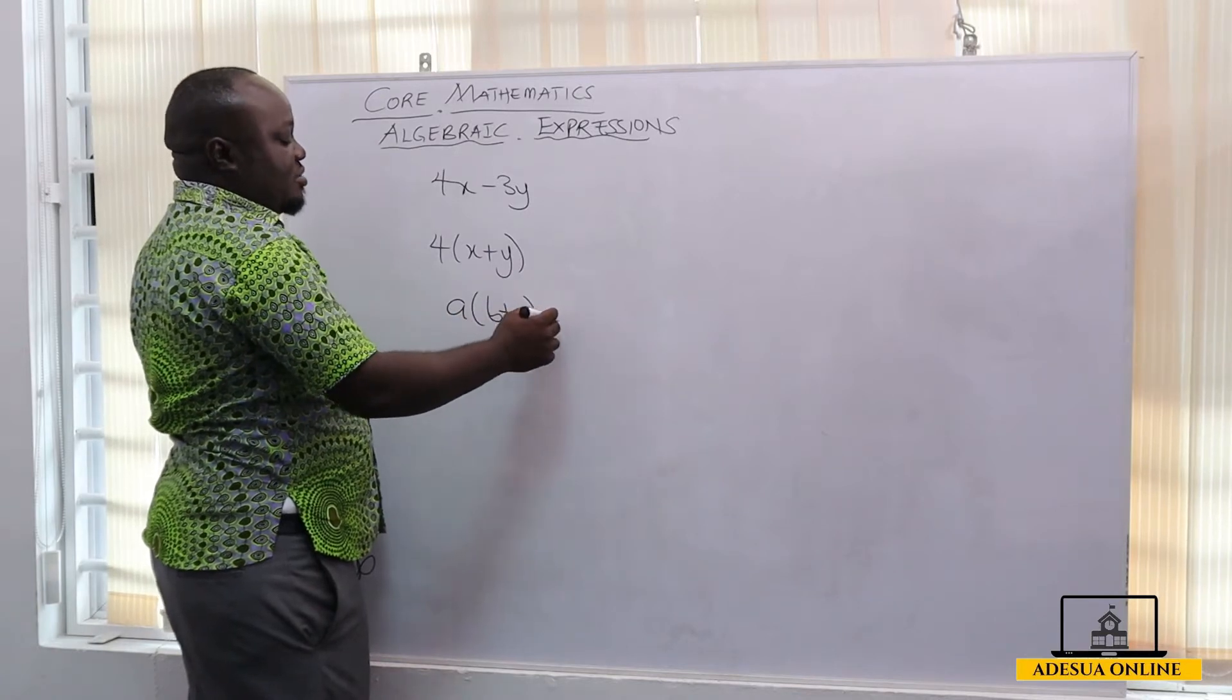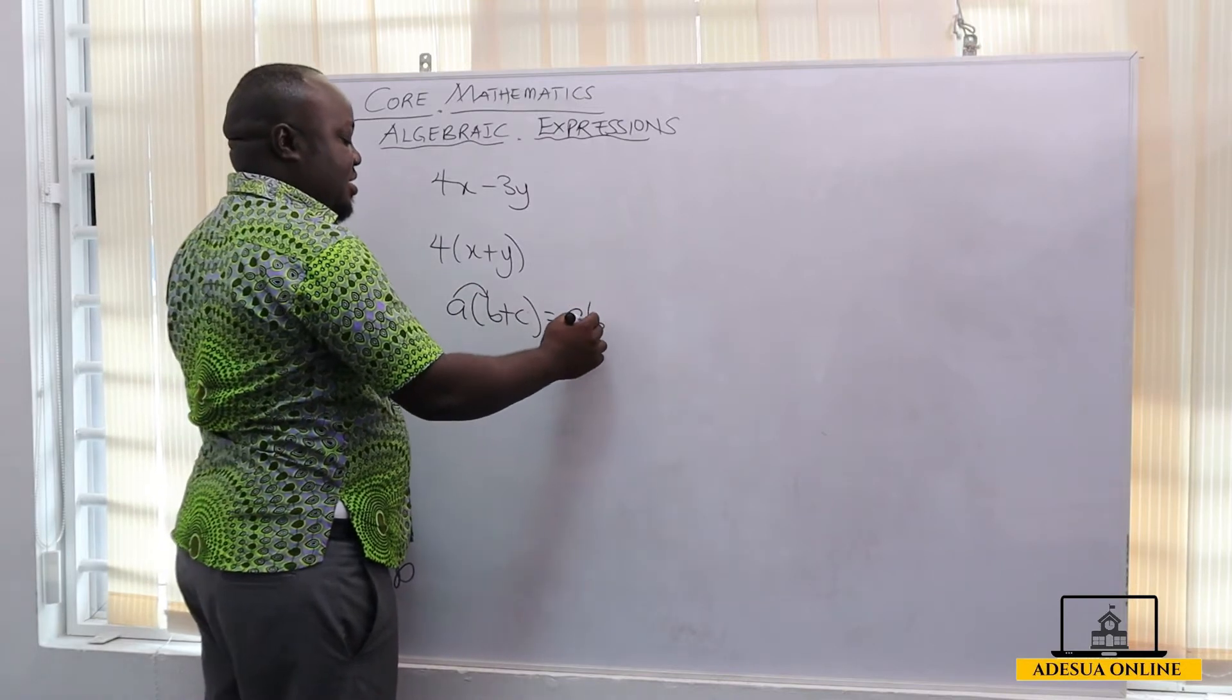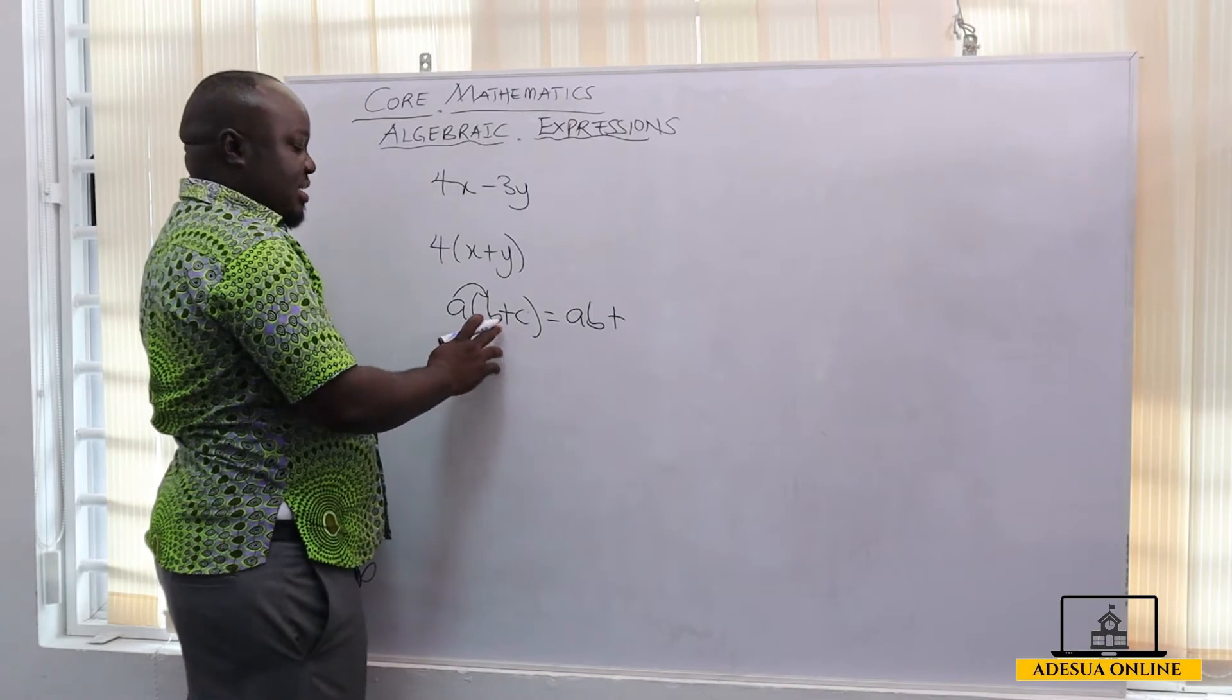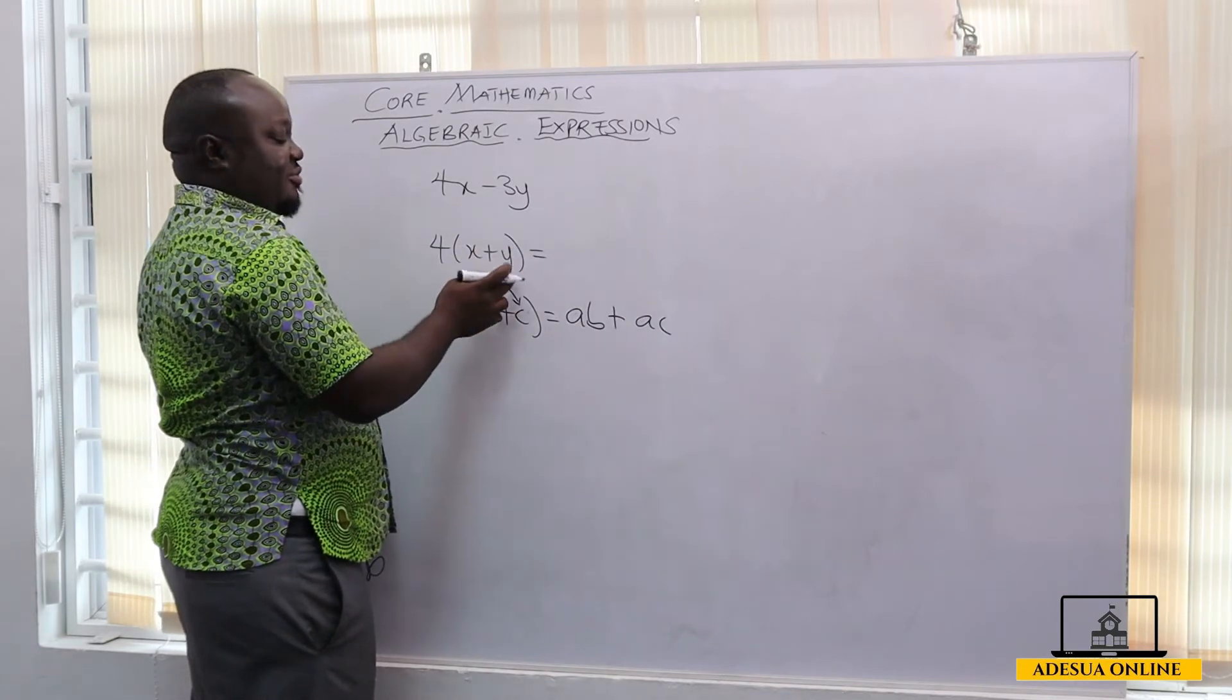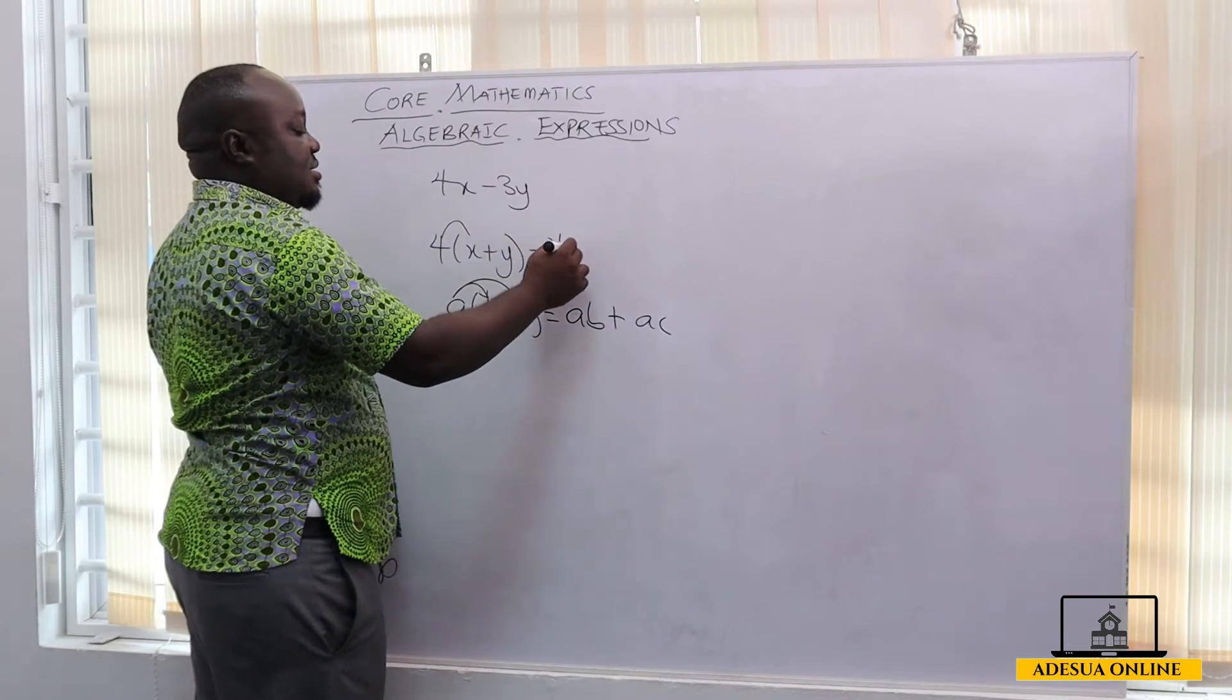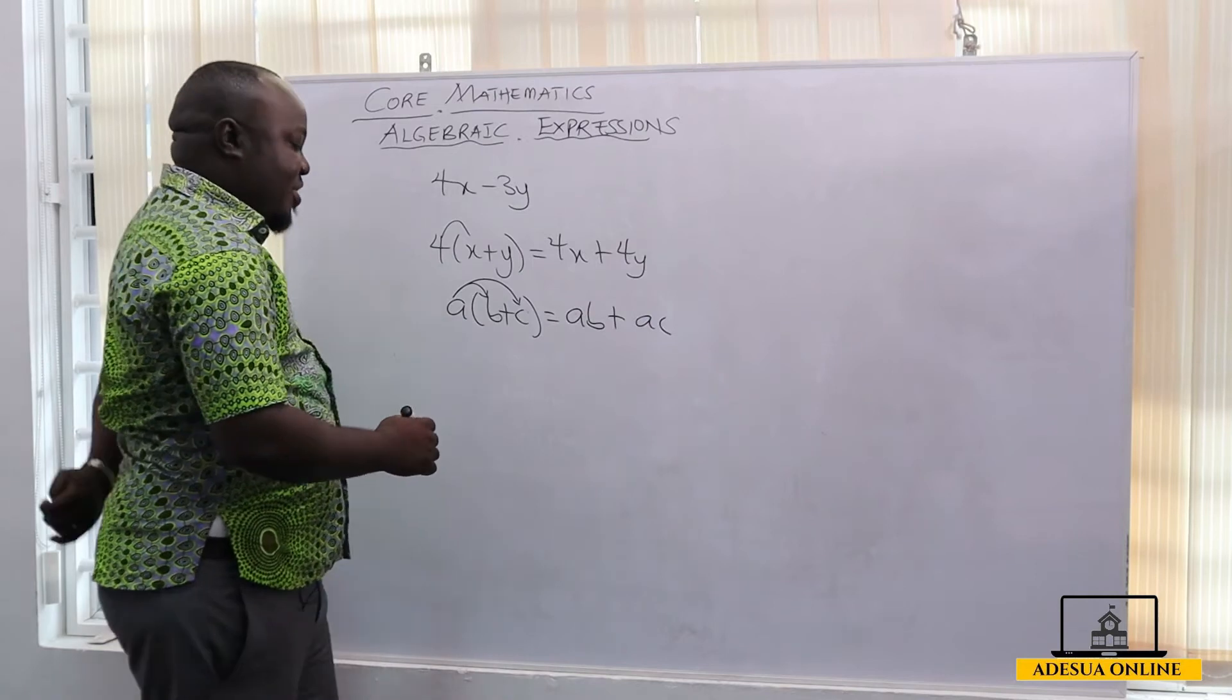The a will multiply the b, so this becomes ab, then the symbol follows, which is our operation addition, and then a times c, which is ac. So if I have 4 into x plus y, this is going to give us 4x plus 4y.